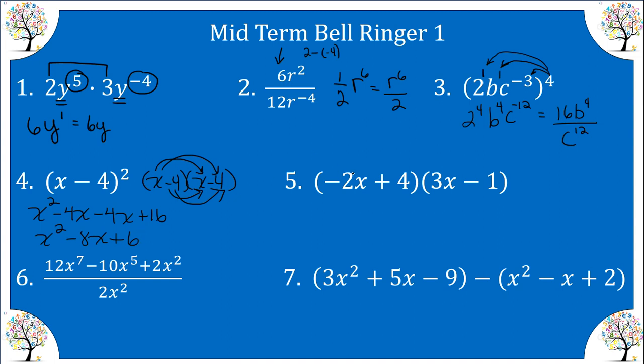Number five, we're just going to straight up distribute negative two X, and then distribute four. We get negative six X squared. You add the exponents. Then we get plus two X.